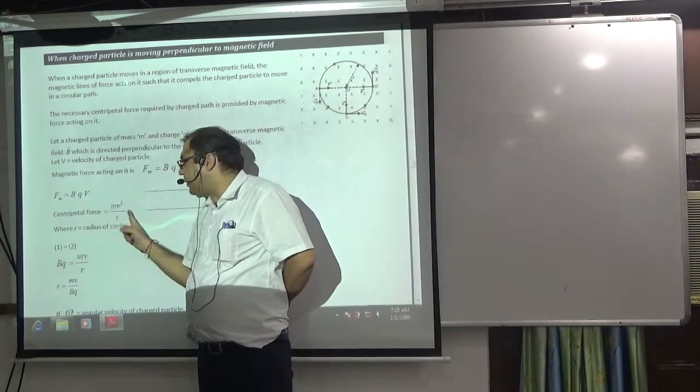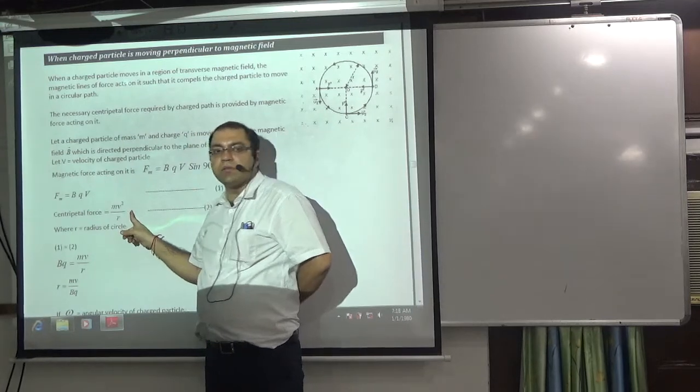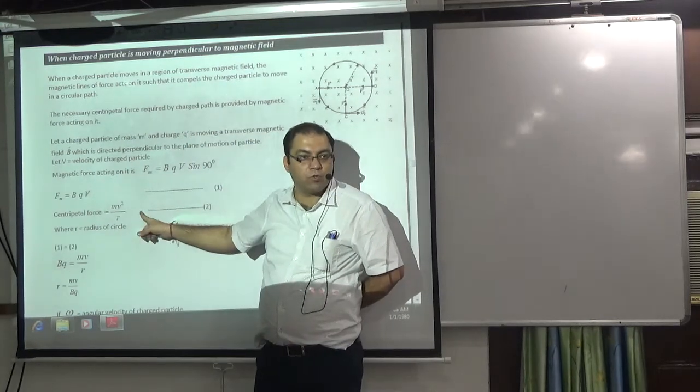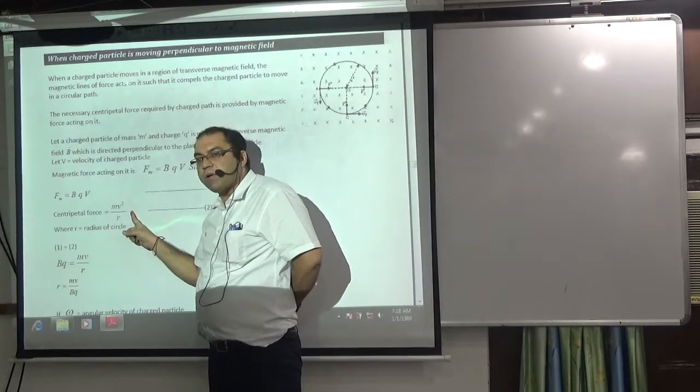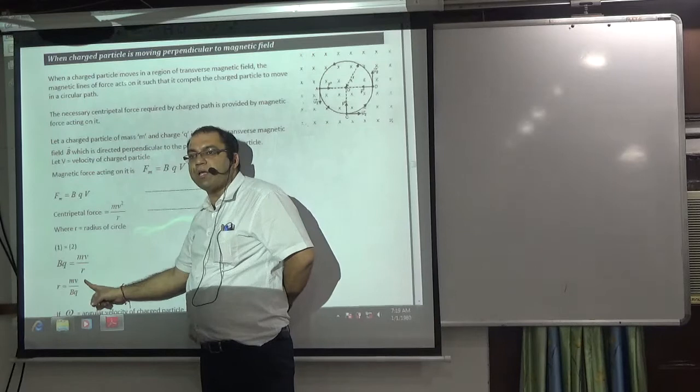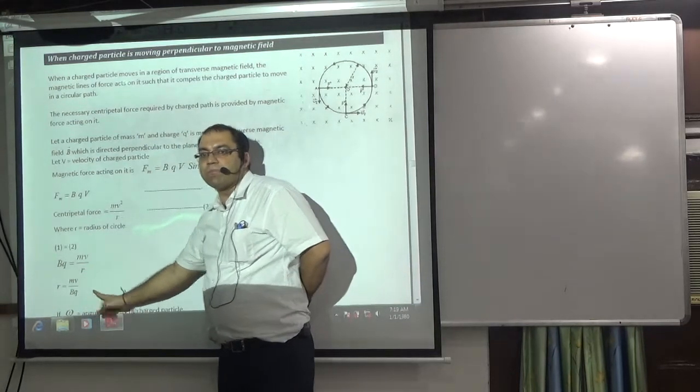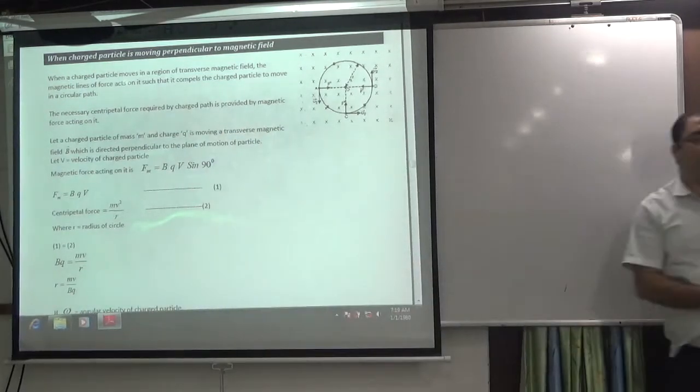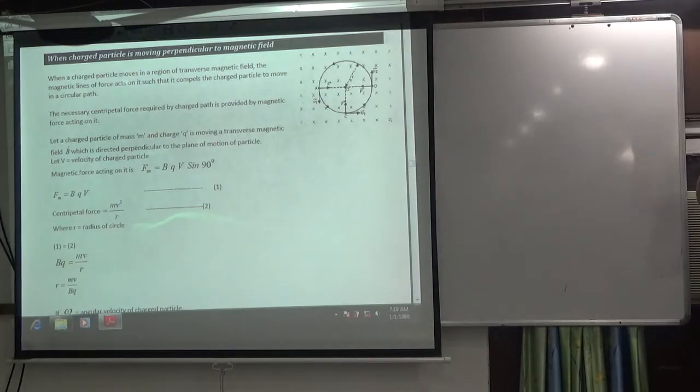What will it provide to the particle? Centripetal. Centripetal formula is mv² by r. So Bqv is equal to mv² by r. One v to v cancel. So here will be mv by bq. Put it in box. r is equal to mv by bq. So the particle will go in a circle with this radius.